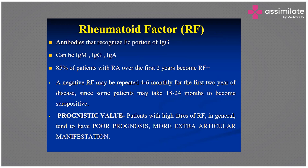Regarding rheumatoid factor (RF): it recognizes the Fc portion of the IgG antibody. Does anyone know what the Fc portion is? The Fc portion is responsible for the biological activity of the antibody — recall the antibody diagram. RF can be IgM, IgG, or IgA.